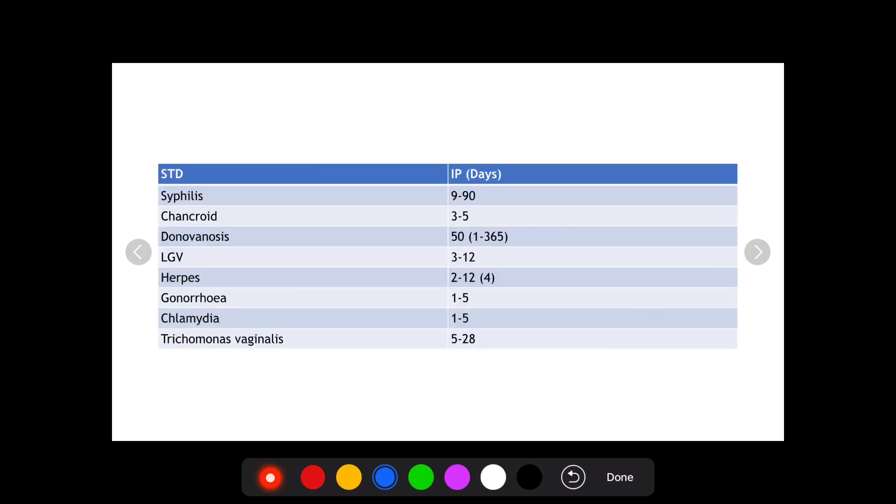Now, the incubation period of various STDs and common STDs is as follows. As far as syphilis is concerned, it's 9 to 90 days. For chancroid, which is caused by H. ducreyi, it's 3 to 5 days. For donovanosis, the average incubation period is 50 days, while it can actually range from 1 to 365 days. For LGV, it has been described as 3 to 12 days.